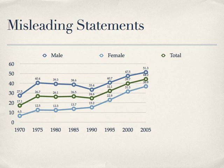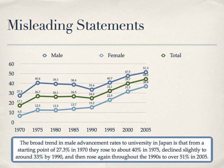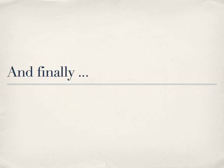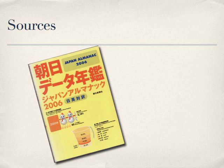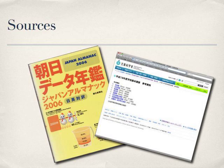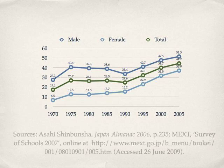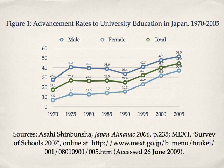What would be a more accurate statement? How about this: 'The broad trend in male advancement rates to university in Japan is that from a starting point of 27.3% in 1970, they rose to about 40% in 1975, declined slightly to around 33% by 1990, and then rose again throughout the 1990s to over 51% in 2005.' And finally, do not forget to mention where you got your data. The data for figure 1 is from two sources: the Japan Almanac 2006, and a download file on the website of the Ministry of Education, Culture, Sports, Science and Technology, or MEXT. So we can add a reference like this to our graph, along with a figure number and title.